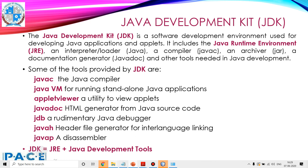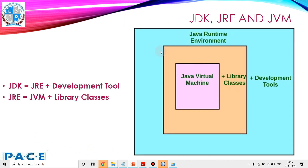So, the Java Development Kit equals JRE — the Java Runtime Environment — plus the Java development tools. This will be clearer from the diagram. JDK consists of JRE plus the development tools. The Java Runtime Environment includes JVM — the Java virtual machine — plus the other library classes.